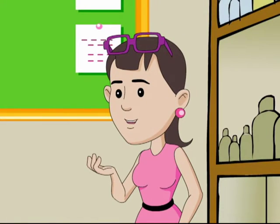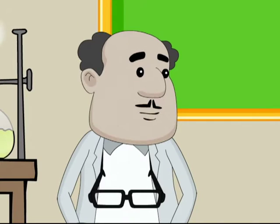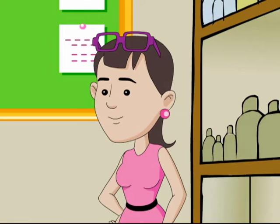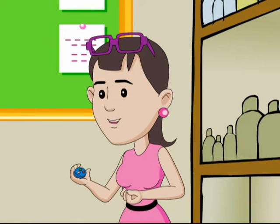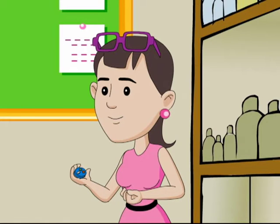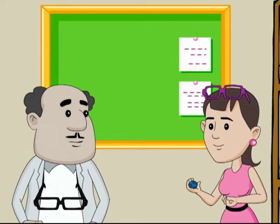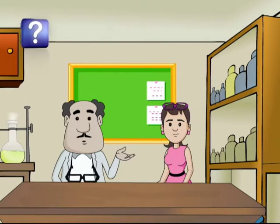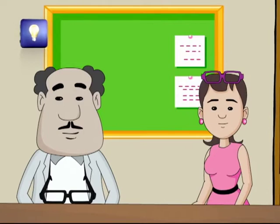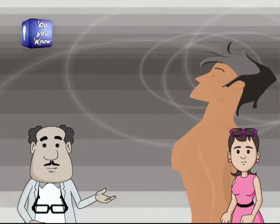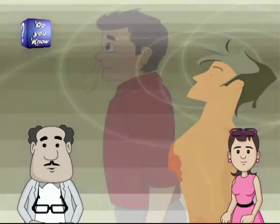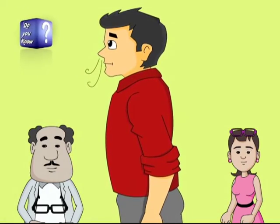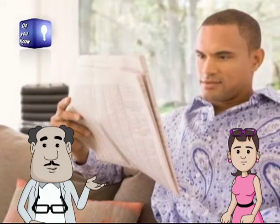Now I know a lot about breathing! Really? So tell me, what do you know about breathing rate? Let me count how many times I breathe in a minute! Breathing rate is defined as the number of breaths a living being takes per unit time, generally per minute. It is calculated by counting the number of times a person's chest expands and contracts in one minute.